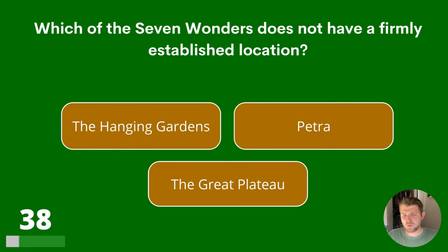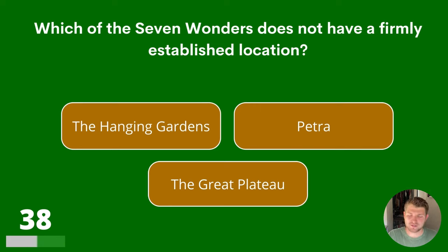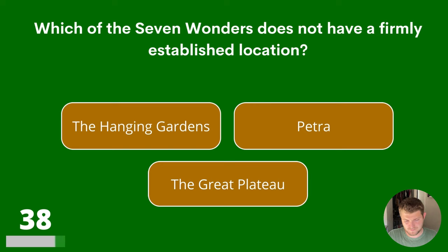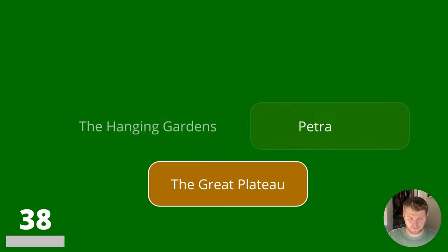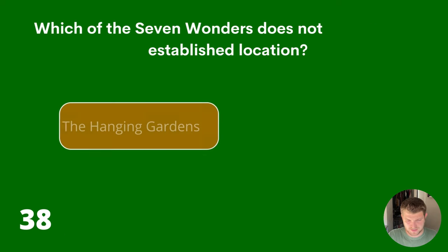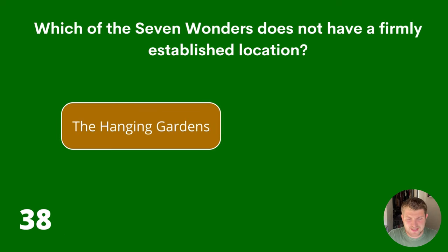Question 38. Which of the Seven Wonders does not have a firmly established location? The Hanging Gardens, Petra or the Great Plateau? The answer is The Hanging Gardens.